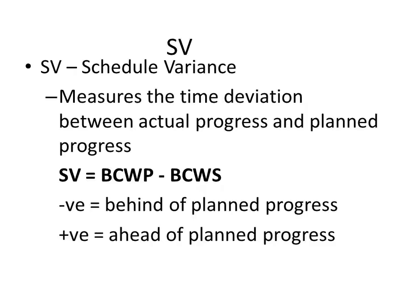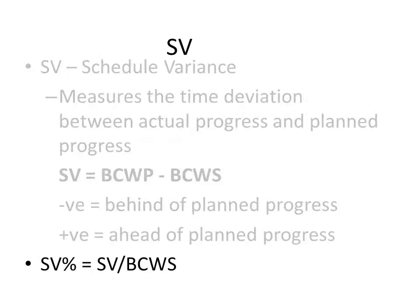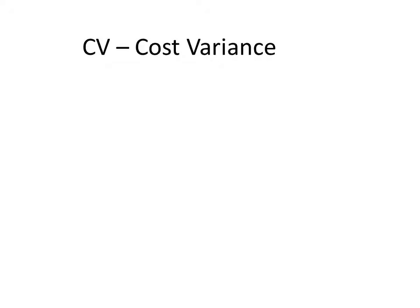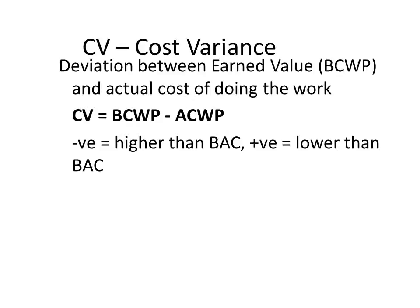Schedule variance is a measure of time deviation between actual progress and planned progress. If the result is a negative figure, it's bad news — your project is falling behind plan. If it's positive, your project is ahead of plan. The formula used to calculate schedule variance percentage is: schedule variance divided by budgeted cost of work schedule.